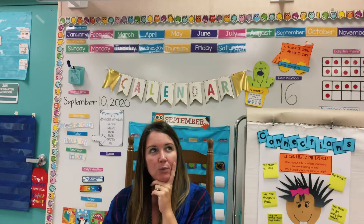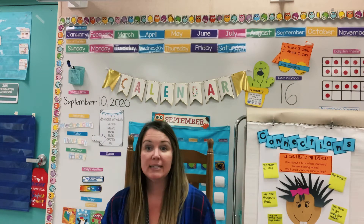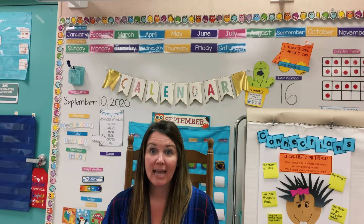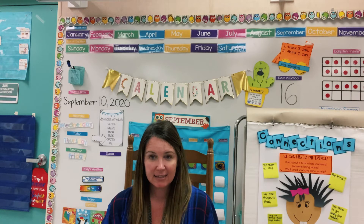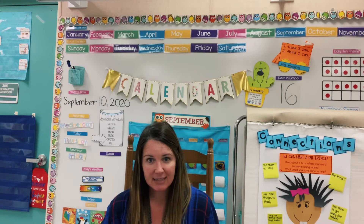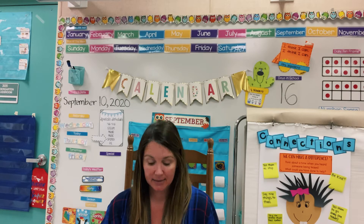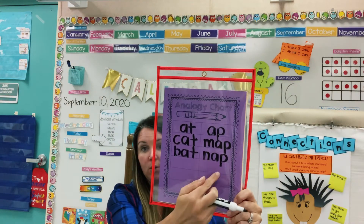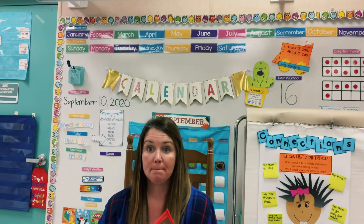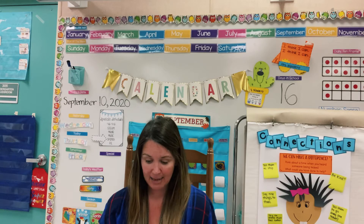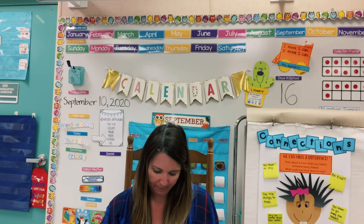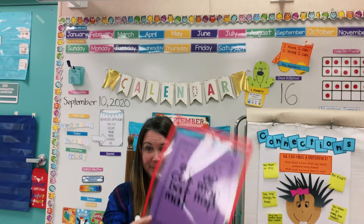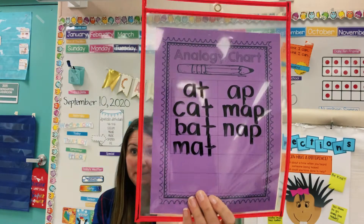My next word is going to be 'mat.' There was a doormat to welcome guests. Mat. See if you can figure out — it's going to go in the 'at' family or the 'ap.' M-a-t. Mat. Did you get it right? Mat.